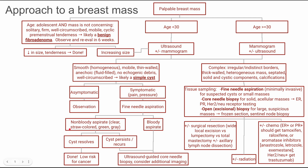You don't have to worry about cancer. If it's a non-bloody aspirate and the cyst is still there — you still see some loculations or parts of the mass — or if the cyst recurs over the next few weeks, then you want to move on to imaging, usually ultrasound-guided core needle biopsy. If the fine needle aspiration showed a bloody aspirate, you also want to do an ultrasound and remove the rest of that mass, and consider additional imaging to get a better idea of what you're looking at.